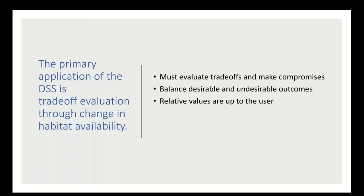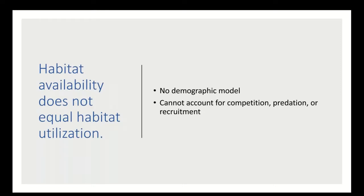The primary application of the DSS is trade-off evaluation through change in habitat availability. When making environmental flow plans, you have to evaluate trade-offs, ultimately make compromises, and balance desirable and undesirable outcomes. We left values up to the user and didn't try to create composite scores or metrics, because those values vary from system to system. We tried to provide good metrics and visuals for people to use. A key limitation of the DSS is that habitat availability does not equal habitat utilization.